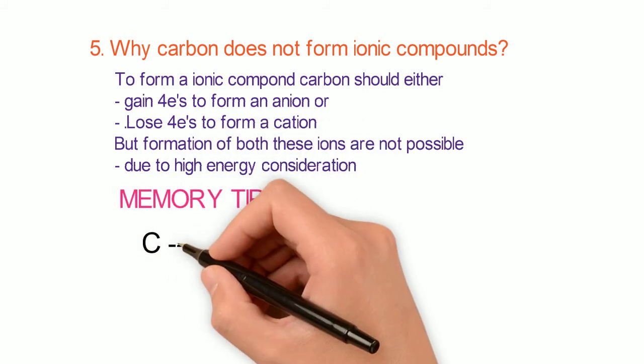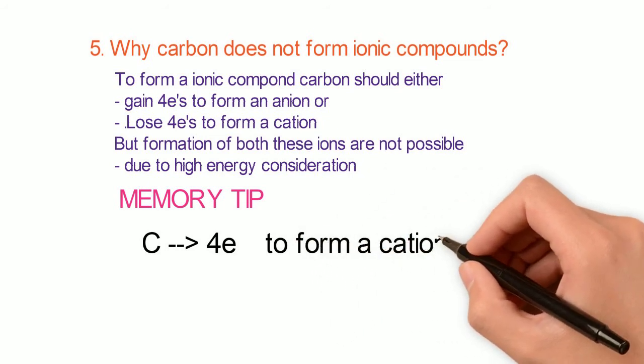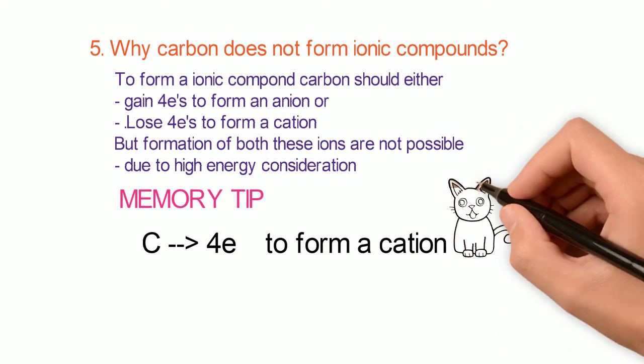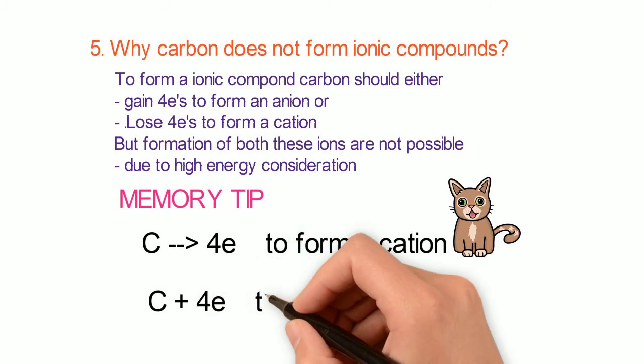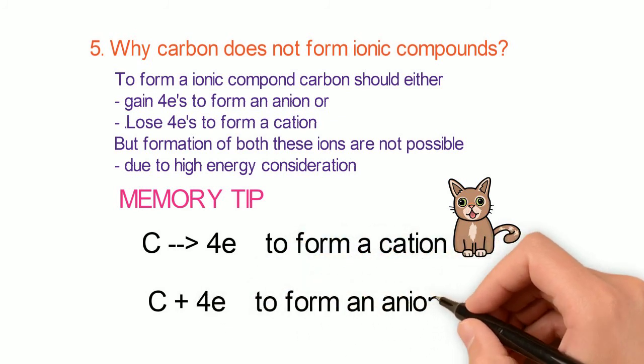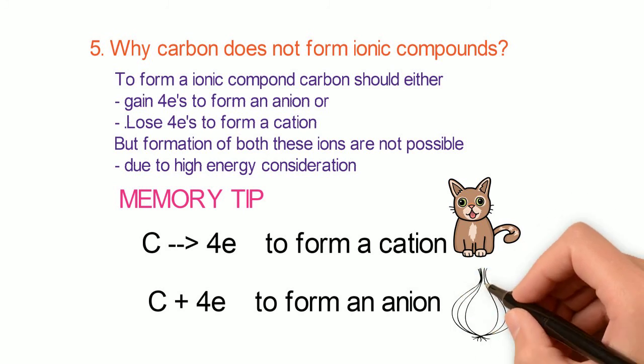Carbon has to lose 4 electrons to form a cation, or it has to gain 4 electrons to form an anion.